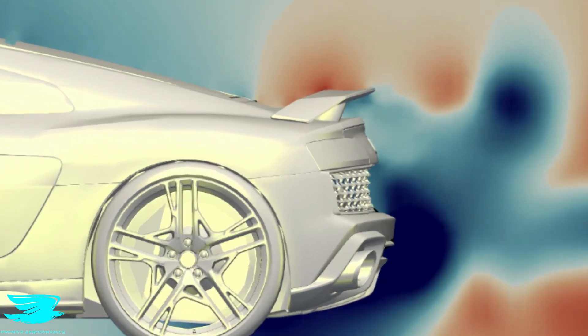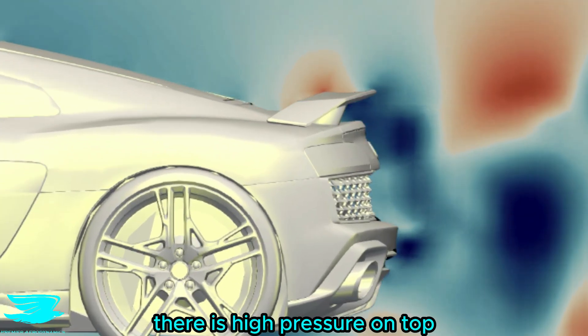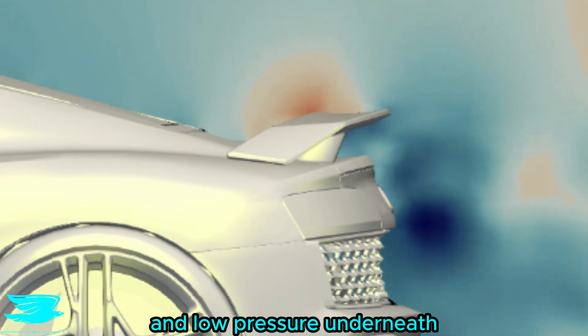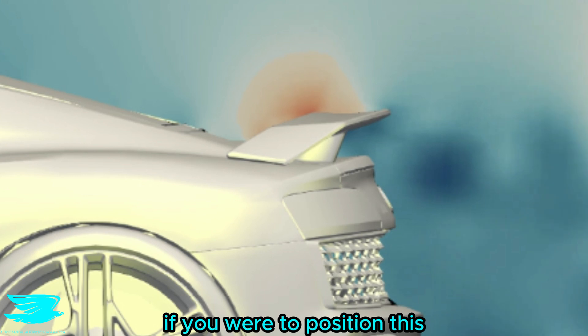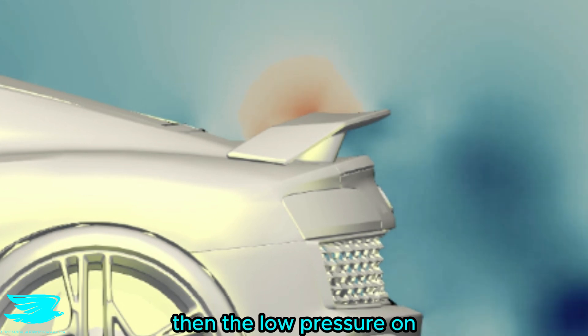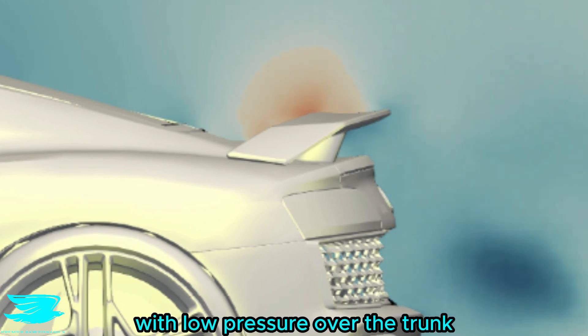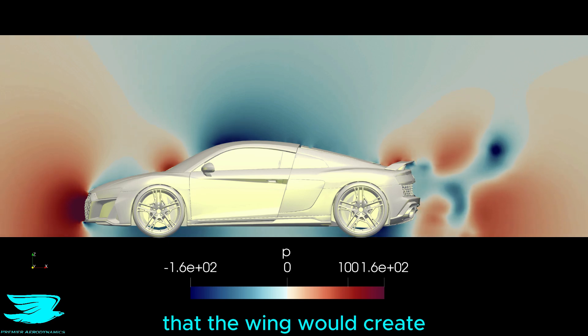But looking at the rear wing, now we see the cleverness of its location. There is high pressure on top and low pressure underneath, which means it is producing downforce, as we need it to. But if you were to position this wing right over the trunk, then the low pressure on the underside would cancel out with the low pressure over the trunk and reduce the downforce that the wing would create.